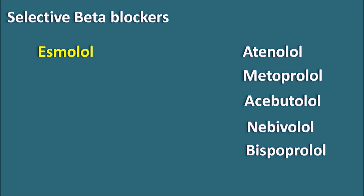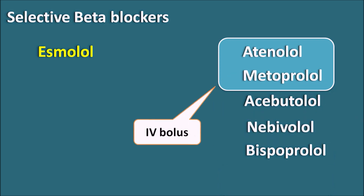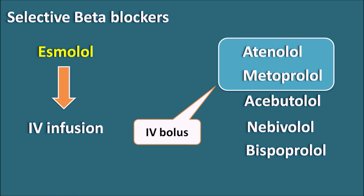Among them, esmolol is the only drug which is given by IV infusion. Selective beta blockers can generally be given by the oral route, and a few such as atenolol and metoprolol can also be given by IV bolus — that is, a single administration by IV route. On the other hand, esmolol is the only one given by IV infusion, which is a continuous administration of the drug by the IV route.